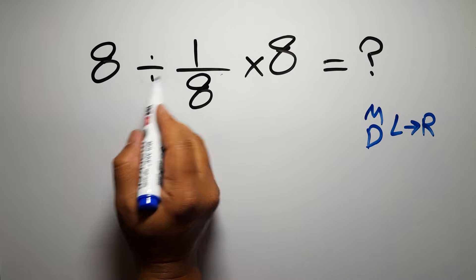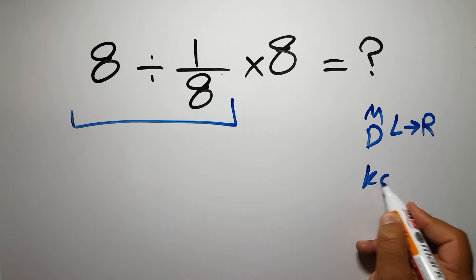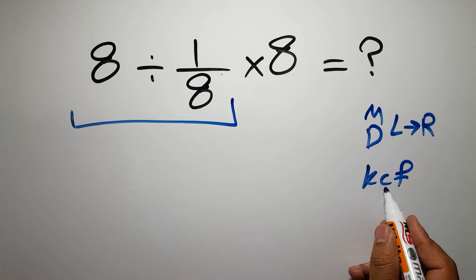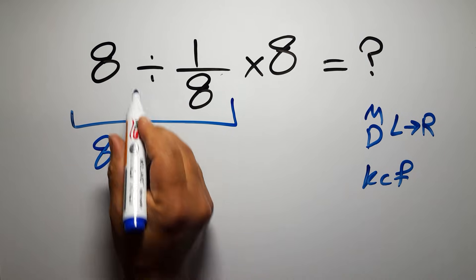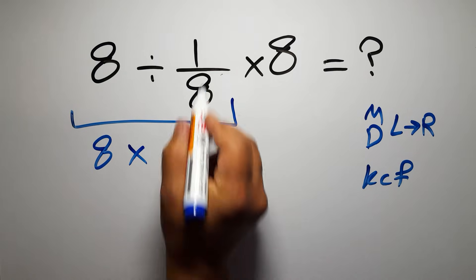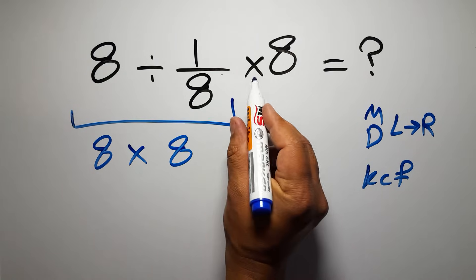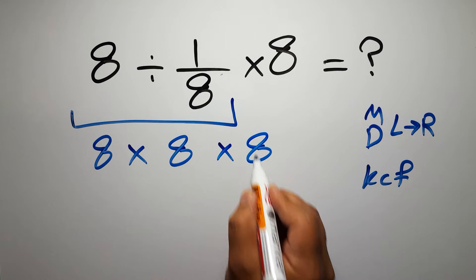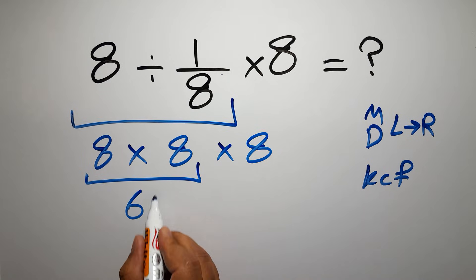So first, this division: 8 divided by 1 over 8. According to the KCF rule, K stands for keep, C stands for change, and F stands for flip. Keep the first fraction, change the division to multiplication, and flip the second fraction. So we have 8 times 8, and again times 8.